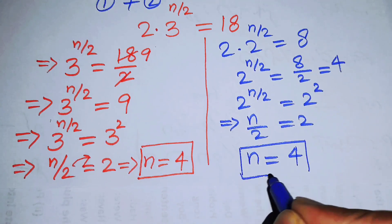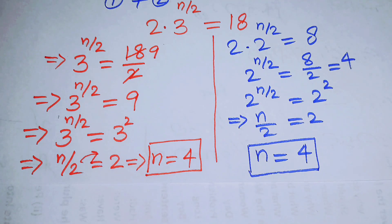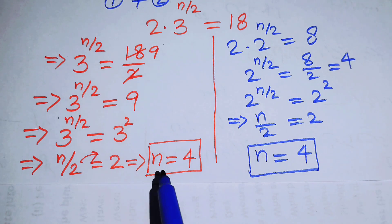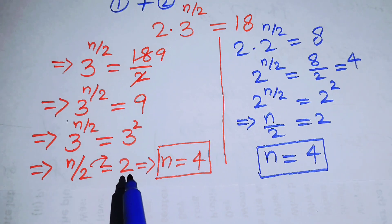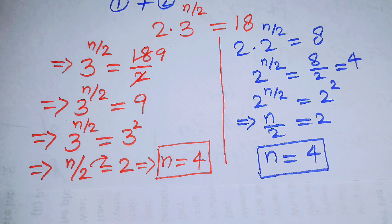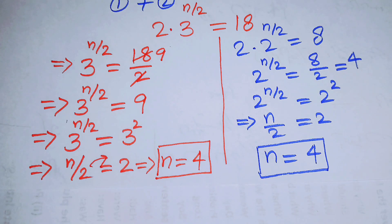This shows there is only one root: n equals 4 is the only solution satisfying the given equation. We can say that n equals 4 is the unique solution of this problem. Thank you so much for watching — please subscribe to my channel for more exciting videos.